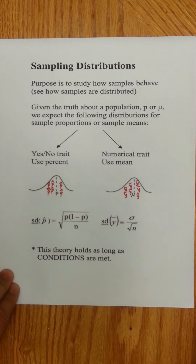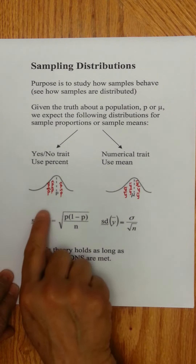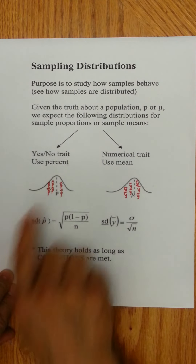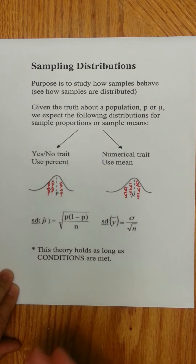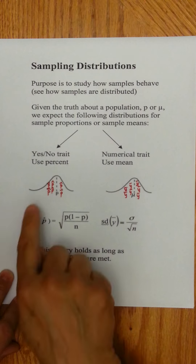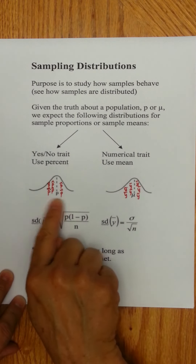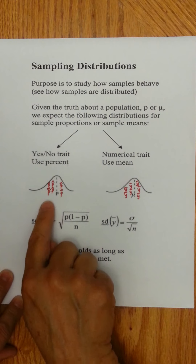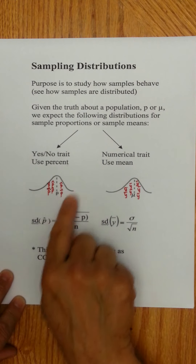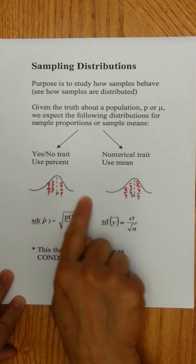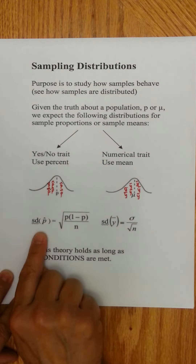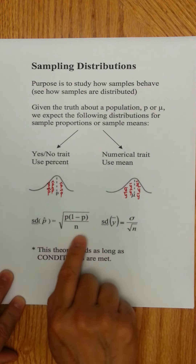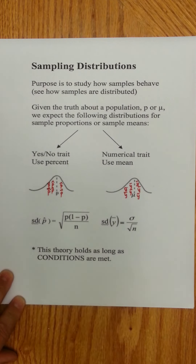In a sampling distribution, here for example you have a yes-no trait, you're going to use a percent or proportion to measure that yes-no trait. You take samples and those samples are called sample proportions. They pile up around the mean p in a normal distribution and spread out by the standard deviation: square root of p times 1 minus p over n, and 1 minus p can be q.